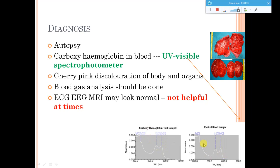All these analyses were performed after the death of the person, providing insight into these situations. Blood gas analysis can also be done. While ECG, EEG, and MRI are sometimes attempted, they are generally not found to be helpful. UV spectroscopic analysis, autopsy, and discoloration of organs are the more effective diagnostic approaches.